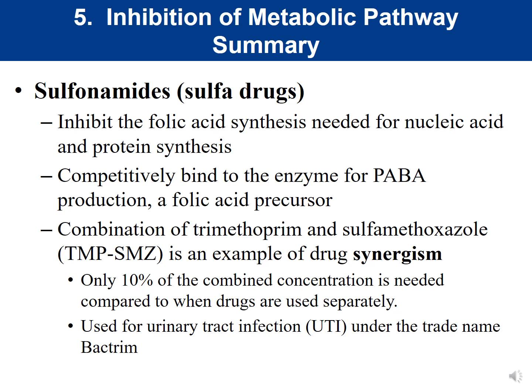The last class is inhibition of metabolic pathways — inhibiting the synthesis of some essential metabolite. We have sulfanilamides, or sulfa drugs, which inhibit folic acid synthesis. Recall that sulfa drugs act as competitive inhibitors of the enzyme that converts PABA to folic acid — if bacteria can't make their folic acid, they can't synthesize nucleic acids and therefore can't divide.